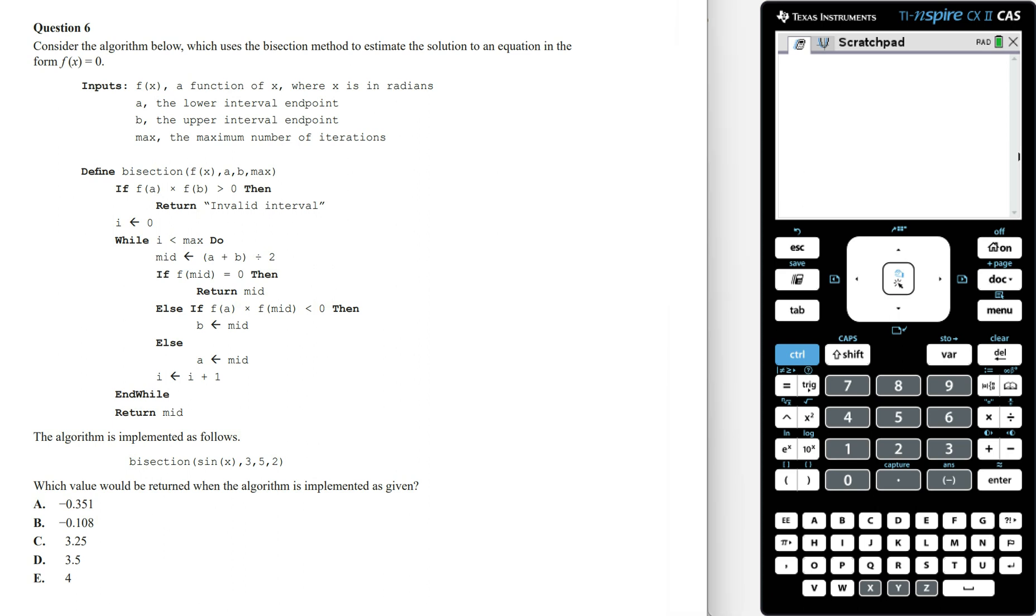Looking at the line defined by section, this requires four inputs and the four inputs we're entering are these values. This means that f of x is equal to sin x, the value of a is equal to 3, the value of b is equal to 5, and the value of max is equal to 2.